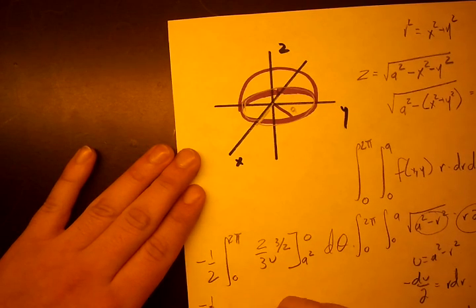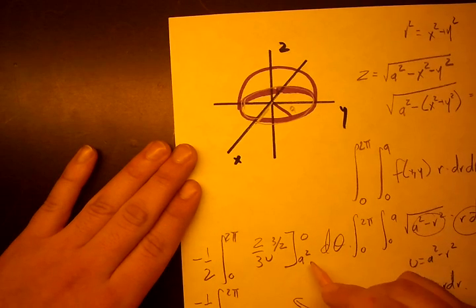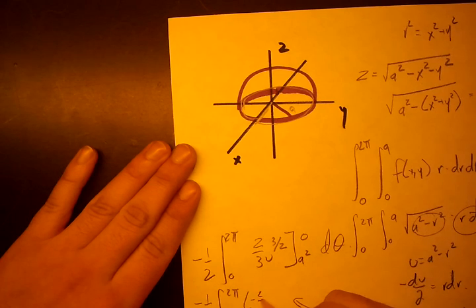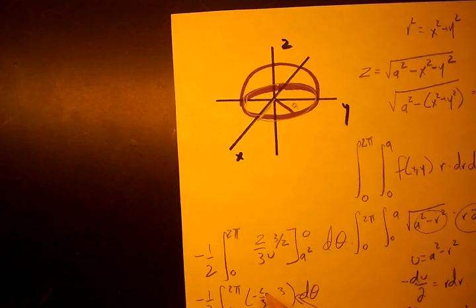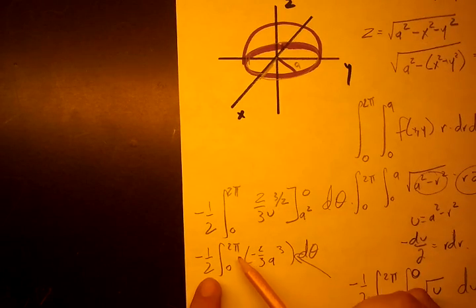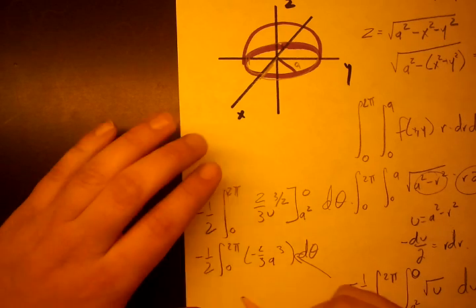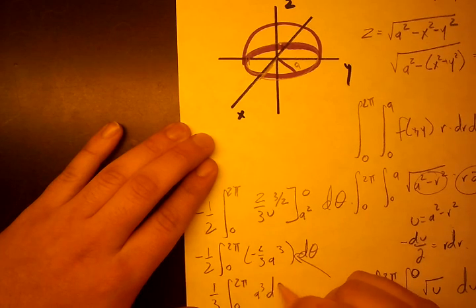So this right here is going to give us negative 1 half integral from 0 to 2 pi. And when we put in 0 and a cubed in here, we get negative 2 thirds a cubed d theta. We're going to take this constant negative 2 thirds and move it to the outside, which is going to combine with this negative 1 half and become 1 third. So 1 third integral from 0 to 2 pi, this a cubed inside d theta.